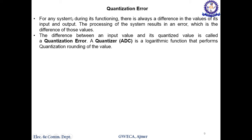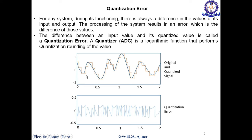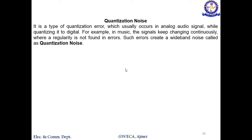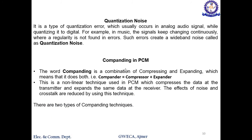Regarding quantization error: for any system there is always a difference between the input and output values. The difference between the input value and its quantized value is called the quantization error. A quantizer (basically an ADC) performs quantization using a rounding function. At certain points the quantization error is zero, and then it increases and decreases based on the signal. Quantization noise is similar to quantization error but usually occurs in audio signals — for example in music, irregularity in the error creates a wide-band noise called quantization noise.